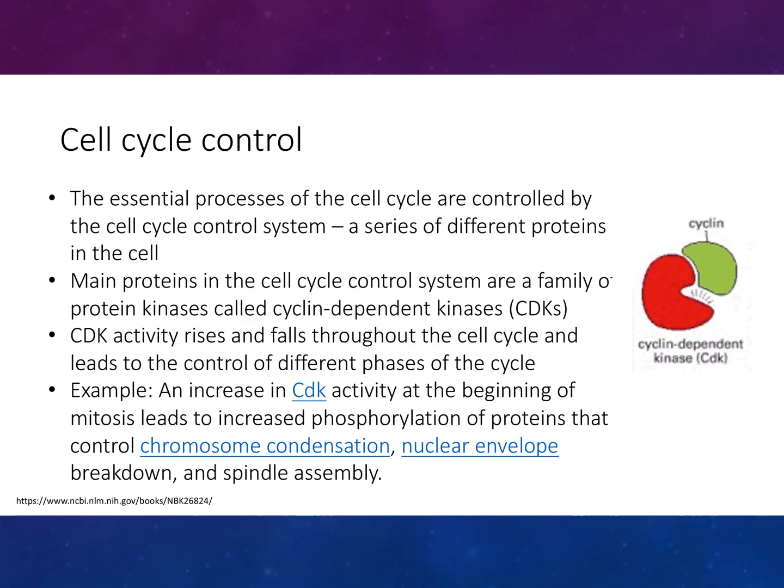To give an example, increasing cyclin-dependent kinase activity at the beginning of mitosis leads to increased phosphorylation of proteins that control chromosome condensation, nuclear envelope breakdown, and spindle assembly.